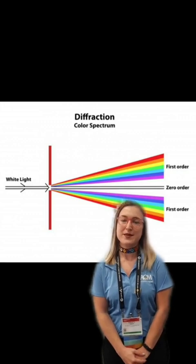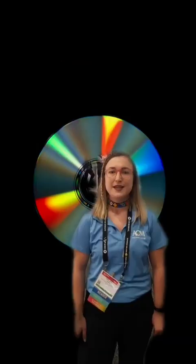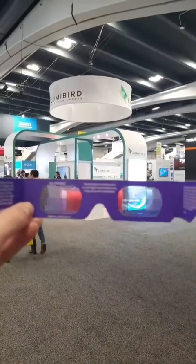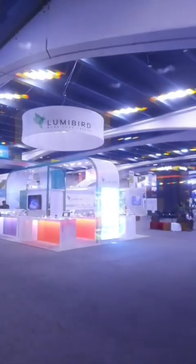Diffraction is the bending of light as it goes around the edges of optics. You can see this on things with tiny grooves or lines like CDs, and it also gives butterfly wings their color. These glasses cause diffraction, so if I put them over my camera, you can see how it's kind of manipulating these lights on the ceiling.